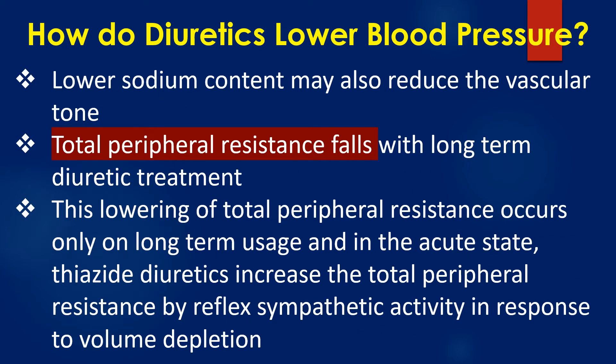Lower sodium content may also reduce the vascular tone. It has been shown that total peripheral resistance falls with long-term diuretic treatment. This lowering of total peripheral resistance occurs only on long-term usage, and in the acute state, thiazide diuretics increase the total peripheral resistance by reflex sympathetic activity in response to volume depletion.